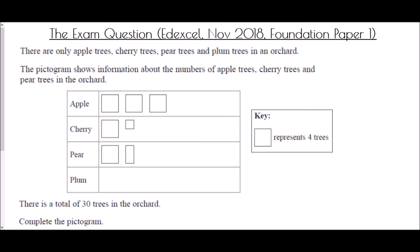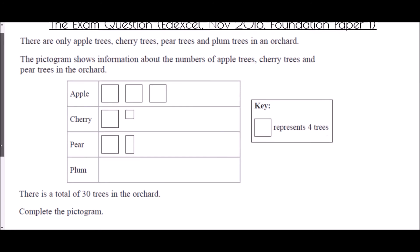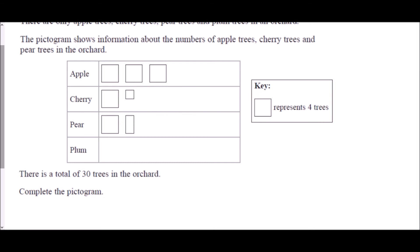And so we're going to end with the exam question. This came from the Excel paper in November 2018 and it was foundation paper one. It says there are only apple trees, cherry trees, pear trees and plum trees in an orchard. The pictogram shows information about the number of apple trees, cherry trees and pear trees in the orchard. And it tells us in our key that a large square represents four trees. It says there is a total of thirty trees in the orchard. Complete the pictogram. So how are we going to go about doing this? Well the first thing here, because we don't know how many plum trees there actually are, we need to work that out. But in order to do that we need to know how many of each other type of tree there is.